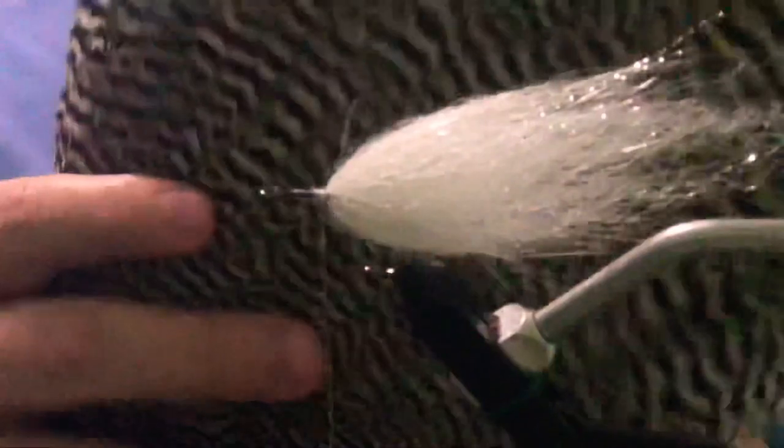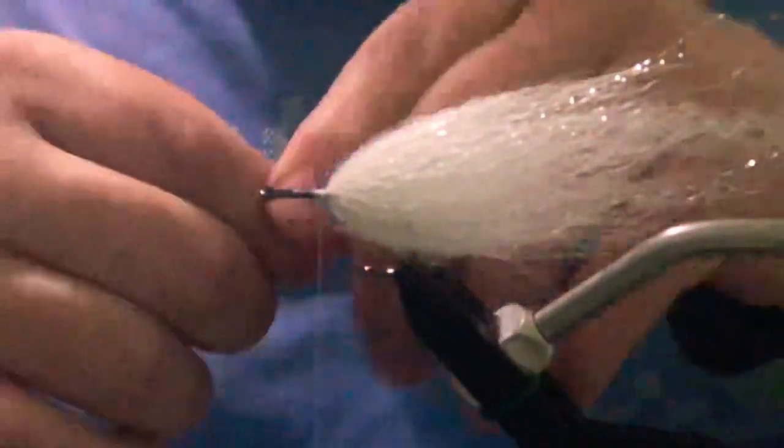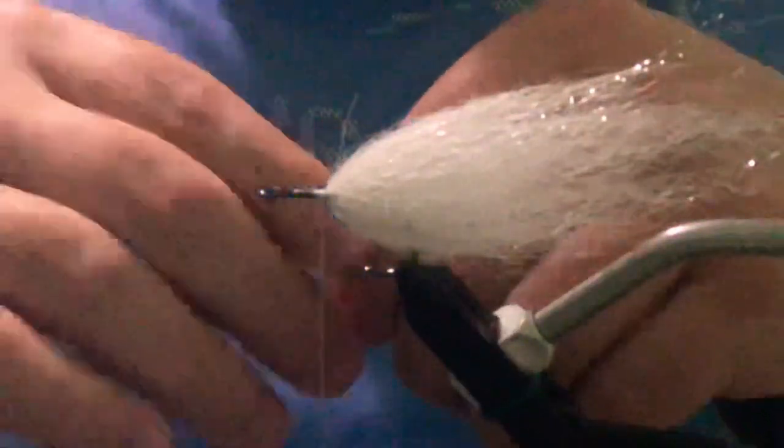So the next thing we're going to do is we're going to get a couple grizzly hackles to go down the sides of the fly. Just find yourself two nice hackles, kind of measure out how far you want them, hold a few of these back. We'll go ahead and tie one in on this side of the fly and then we'll tie one in on the other side of the fly.